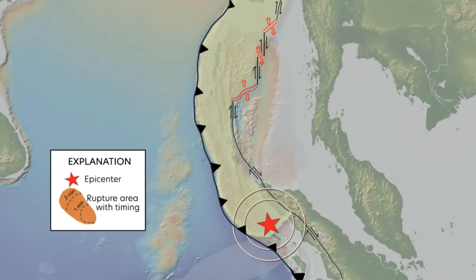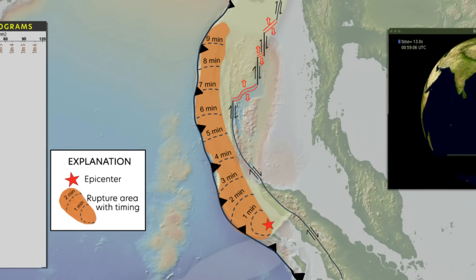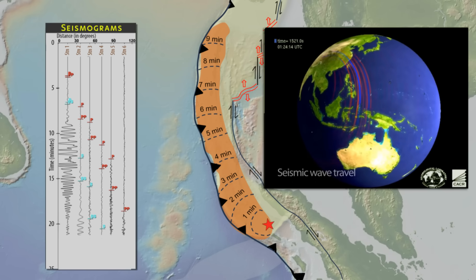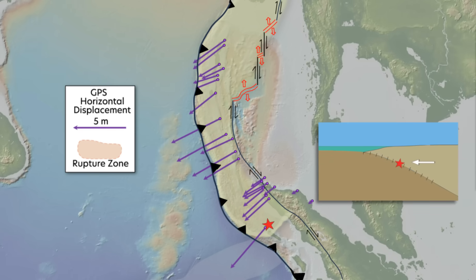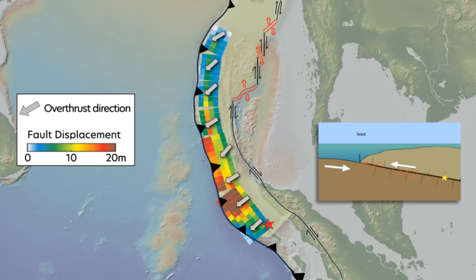The December 2004 earthquake initiated at 30 kilometers depth west of Sumatra and ruptured northward for nearly 10 minutes. Computer models of displacements on the plate boundary were derived from analysis of seismic waves recorded by the Global Seismic Network and GPS observations at monuments reoccupied following the earthquake. This model shows how far and in what direction the overriding plate moved during the earthquake. Maximum displacement off northwest Sumatra was over 20 meters, and displacement decreased northward along the rupture zone.